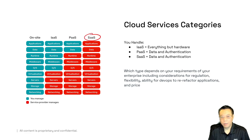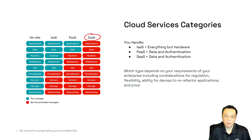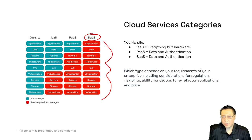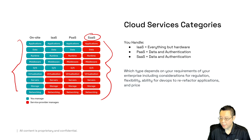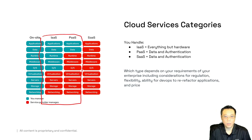Finally, the crème de la crème is SaaS. If you're using Zoom or Office 365, or anything made for an end user to utilize, you don't have any responsibility for maintaining, patching, providing updates, code releases, or anything of that nature — you simply use the product. You have the least amount of control at the SaaS level, and the most control at the data center operation level. Most workloads across customers use a combination of IaaS and PaaS.